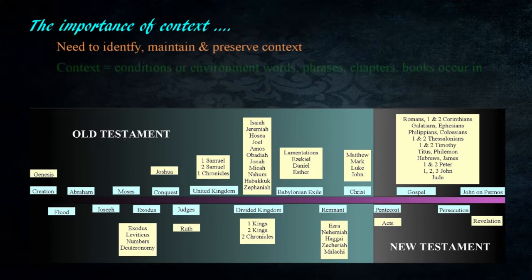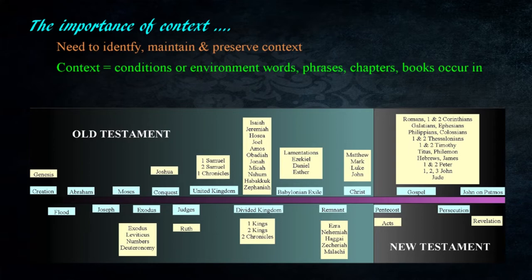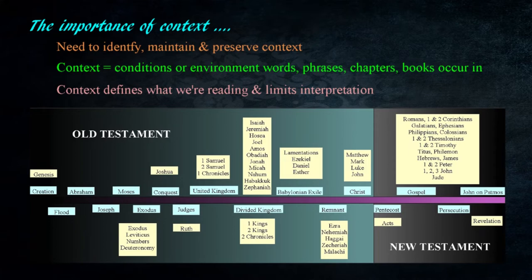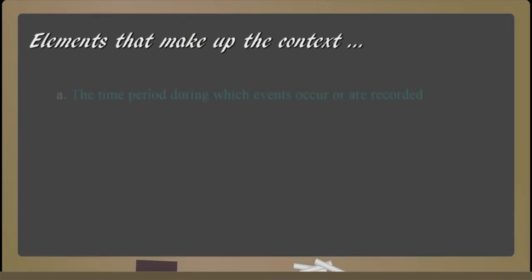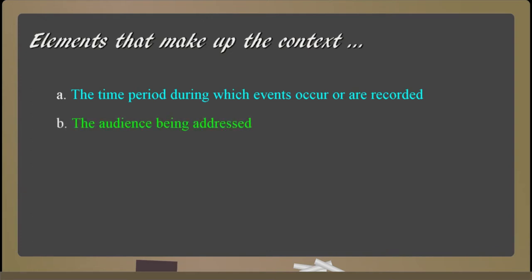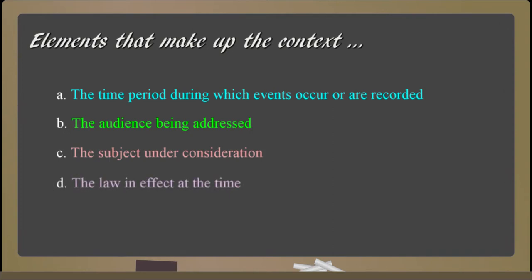A principle I've emphasized throughout these studies is the need to identify, maintain, and preserve the context of passages. I defined context as the conditions or environment that words, phrases, chapters, or entire books occur in. This environment defines what we're reading and therefore identifies limits to our interpretation. The elements of context include the time period, the audience addressed, the subject under consideration, and the law in effect at the time.